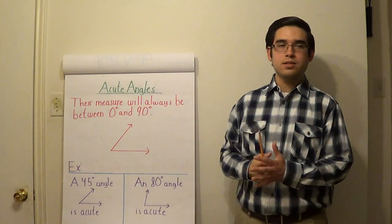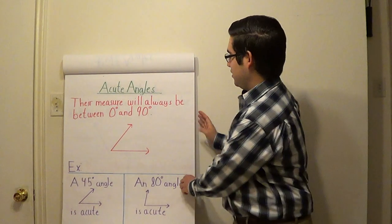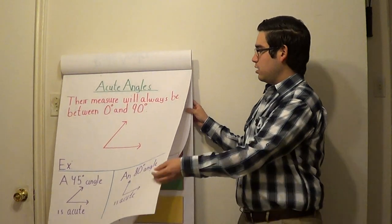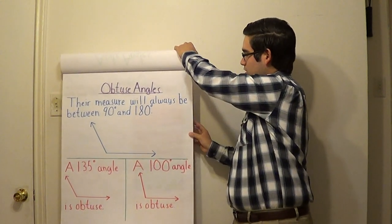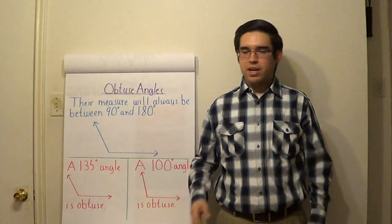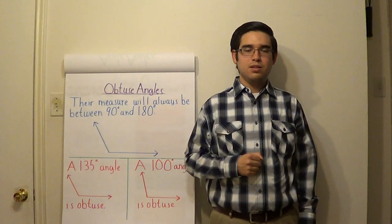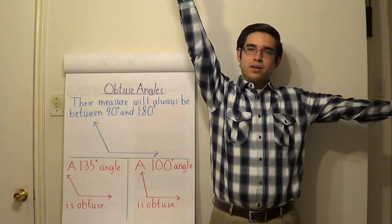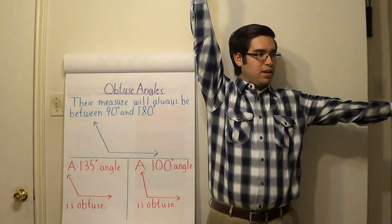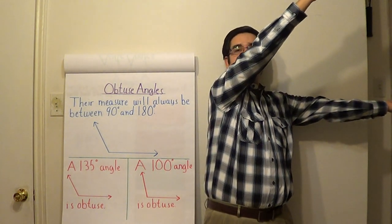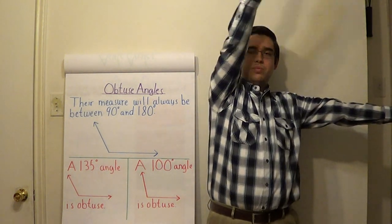Any questions? All right, let's go on — you guys are getting this pretty quickly. Now let's consider obtuse angles. How would a right angle look? Show me with your arms. Yes, that's correct — it will look like this. Now what do I have to do with my right arm to get an acute angle? I have to slant it towards the left. This would be an acute angle — anything between here to here. So what do you think an obtuse angle is going to be?